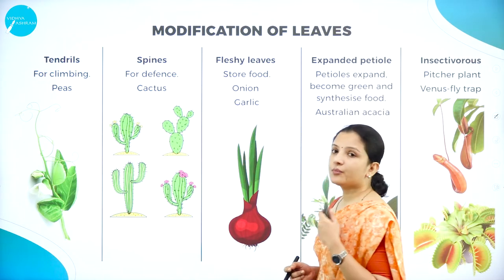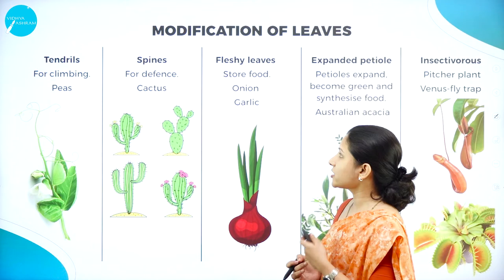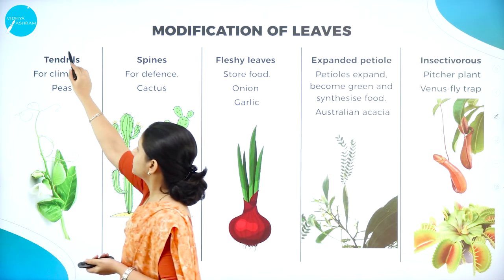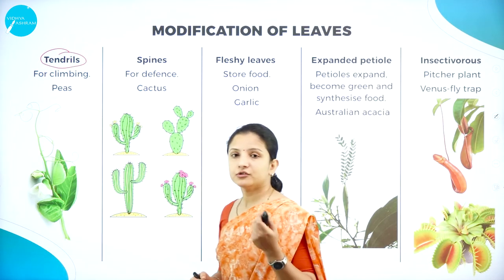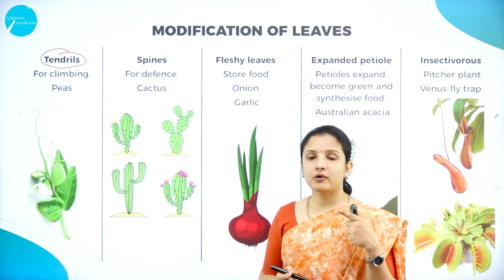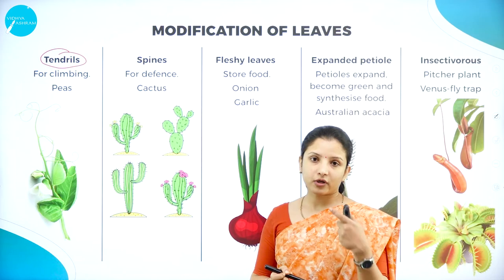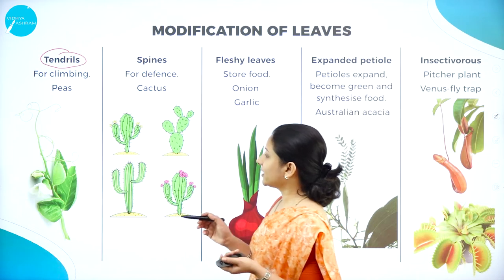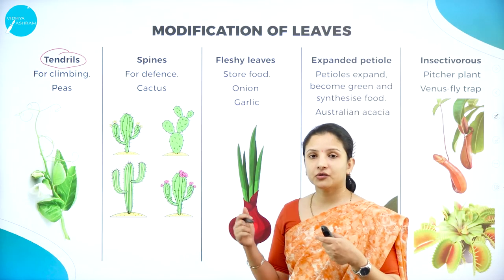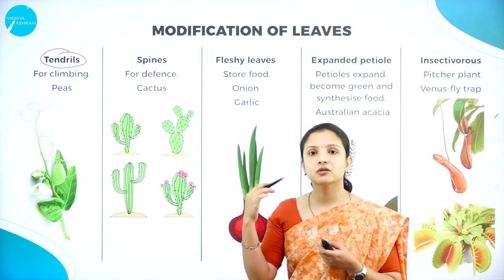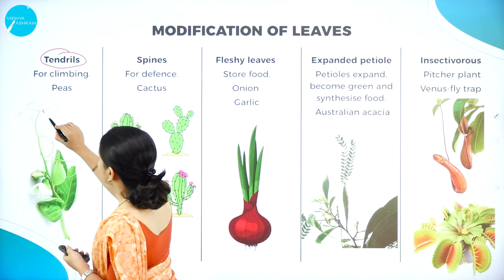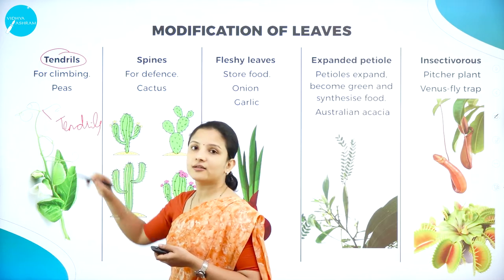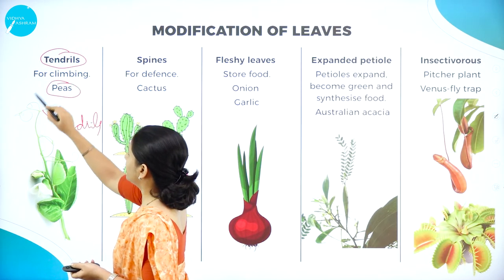Next are the modifications seen in leaves, similar to the modifications we studied in roots and stems. The first modification is the production of tendrils. Just like stem got modified into tendrils in grapes and watermelon, in pea plants the leaf gets modified into tendrils to facilitate climbing. So in the place of the leaf, tendrils get formed. The best example is peas.